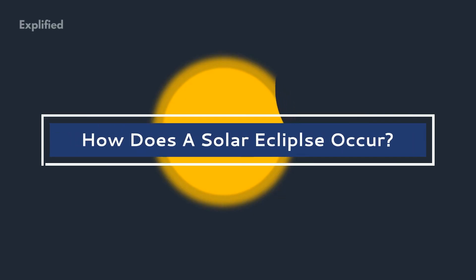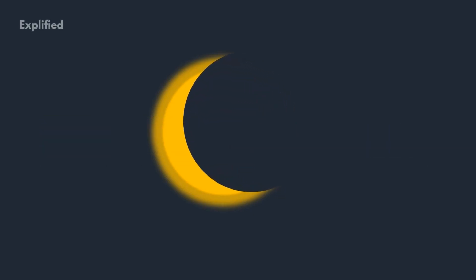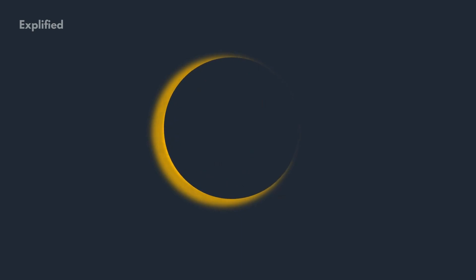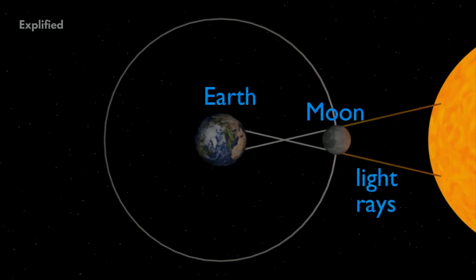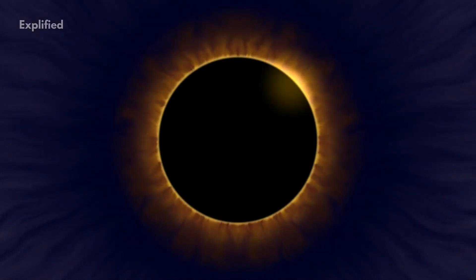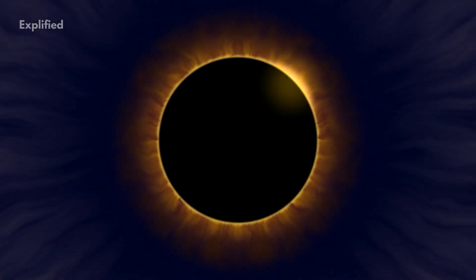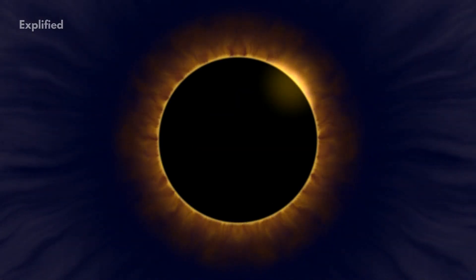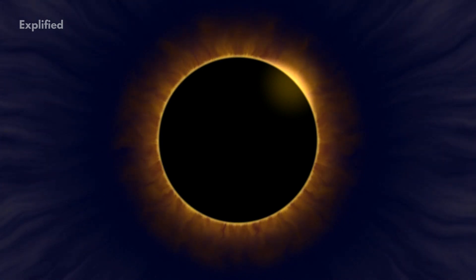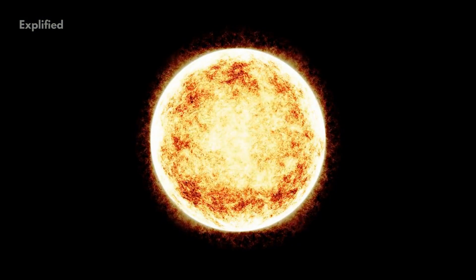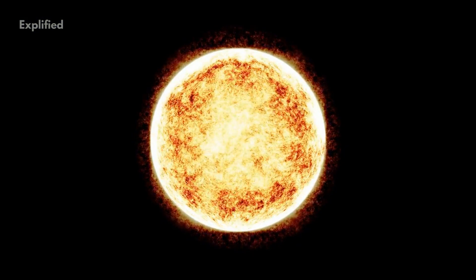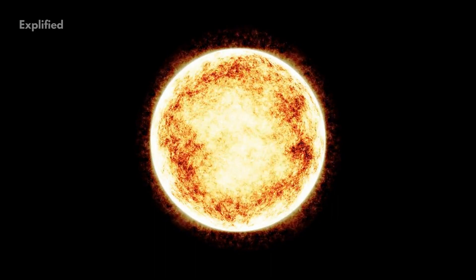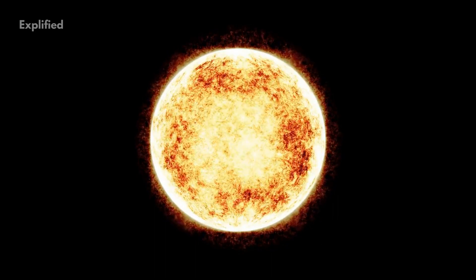A solar eclipse occurs when the Moon passes in a direct line between the Earth and the Sun. The Moon's shadow travels over the Earth's surface and blocks out the Sun's light as seen from Earth. A solar eclipse is a spectacular phenomenon as the Sun and the Moon appear of almost the same size. You'd be astonished to know that in reality, the Sun remains much larger and far away from the Moon.